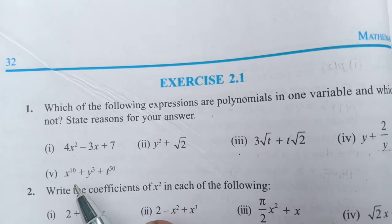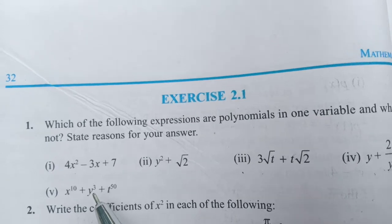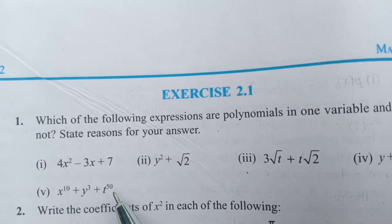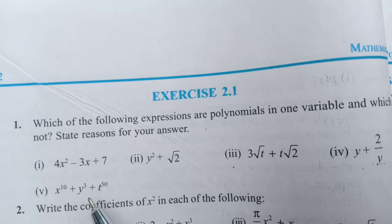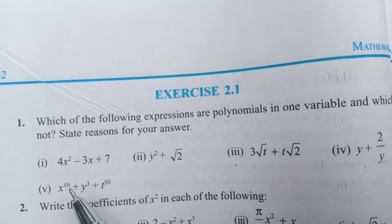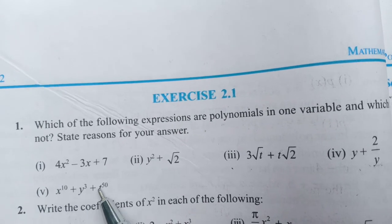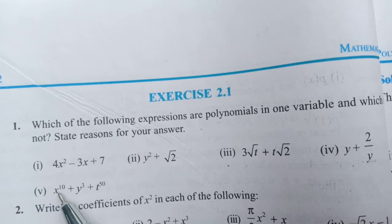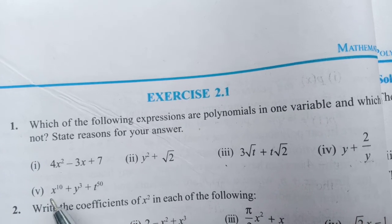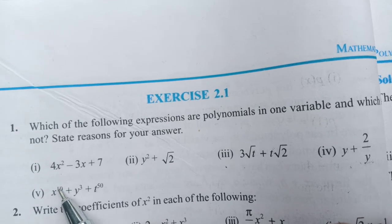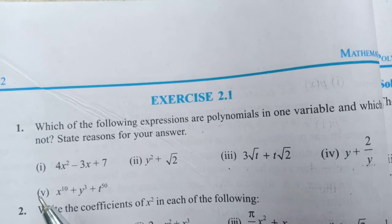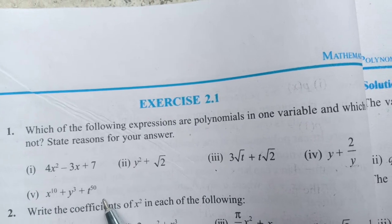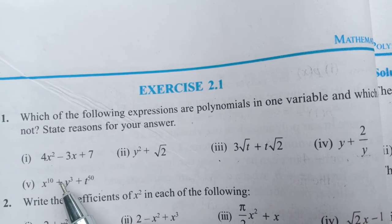The next one: x raised to 10, y³ plus t raised to 50. We can take it as a polynomial. The fifth one is a polynomial because we have real numbers or whole numbers as exponents. The exponent means this top portion, one number or no, that is an exponent or power.